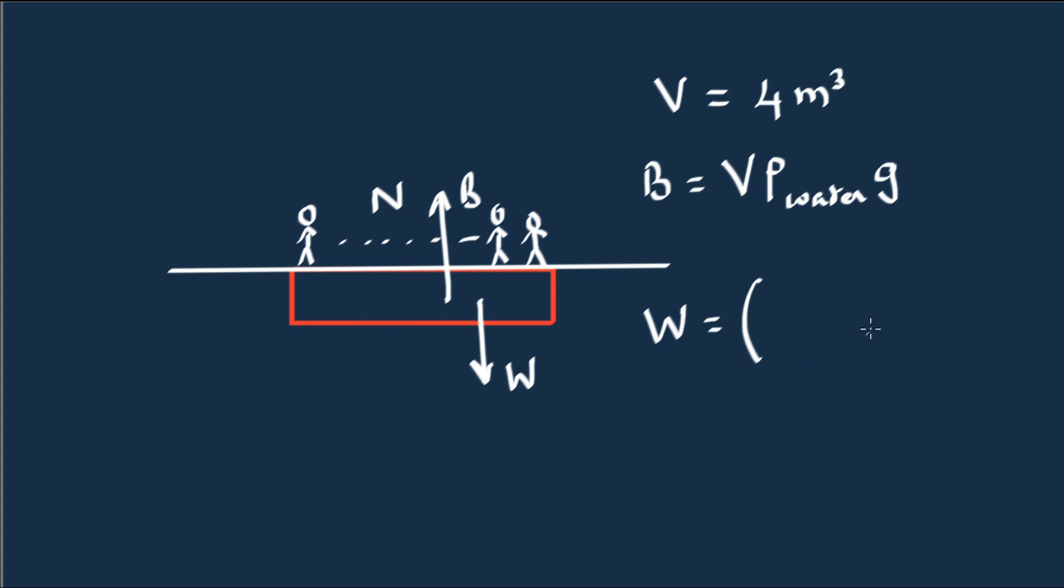And the total weight is going to be equal to the mass of the students, which is 50 kilograms each times n, plus the mass of the raft, which is the total volume of the raft multiplied by the density of the raft. That gives me the mass of the raft multiplied by g gives me the weight.